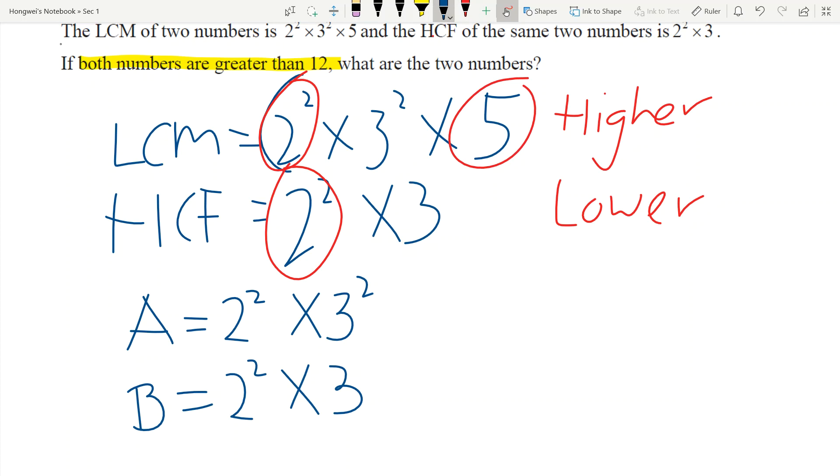So now, can I write 5 here? I can't, because if I write 5 here, the LCM will be exactly the same. So I have to write 5 to this side instead, times 5. So there you go.